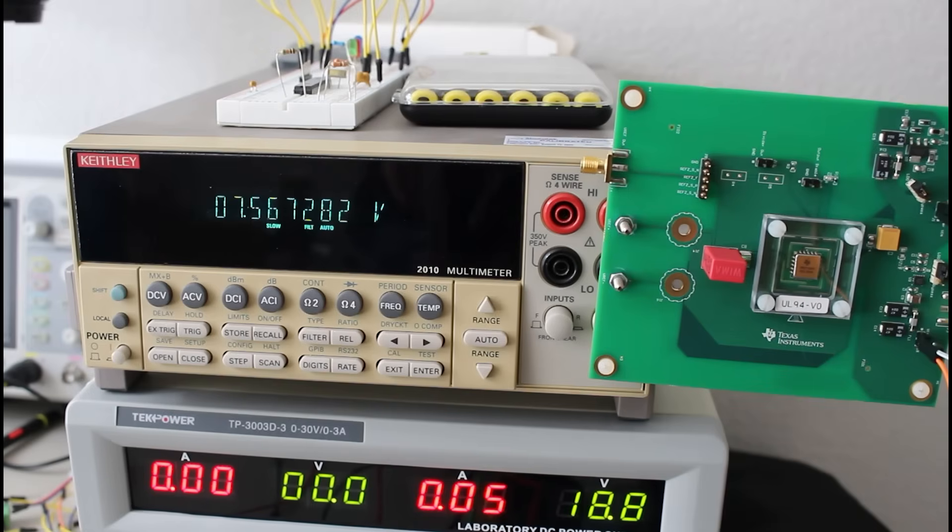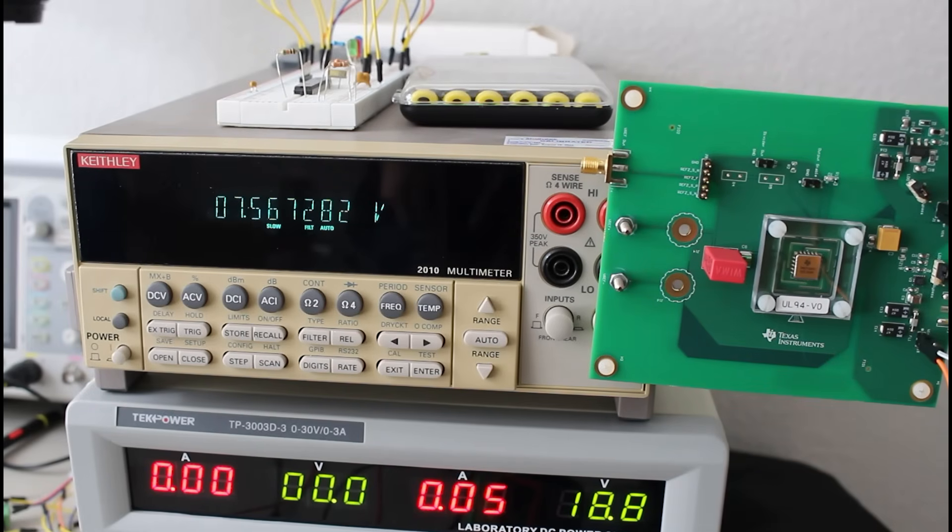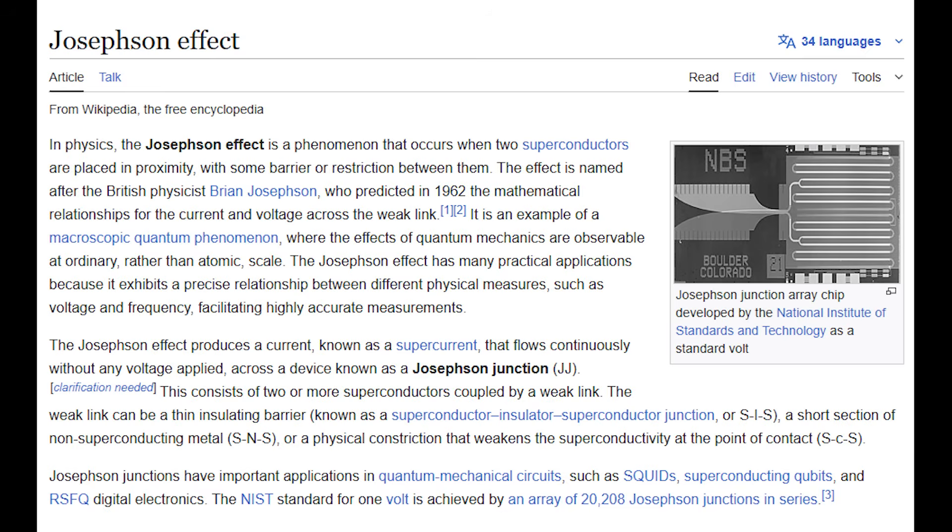Anyway, I thought that we should at least mention the best voltage reference that there is, and that is a Josephson junction voltage reference. It uses superconductors and physical constants to basically create a perfect output voltage. Obviously, this isn't something that I currently have access to, but it's certainly fun to think about.